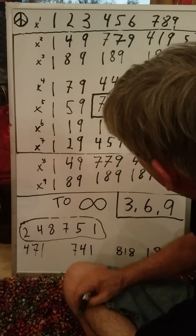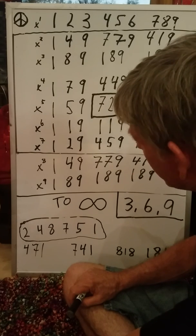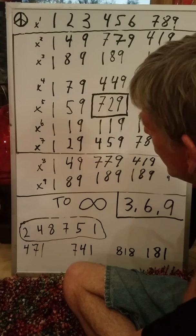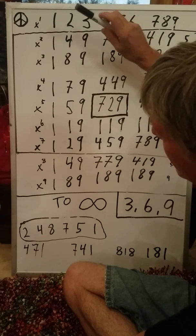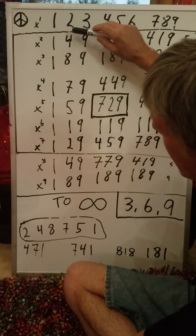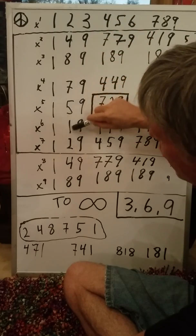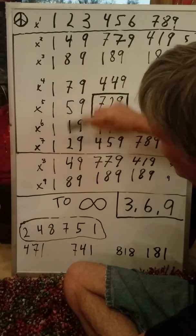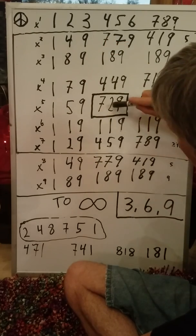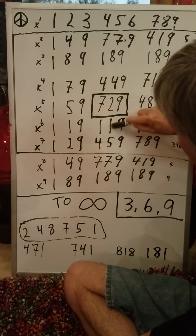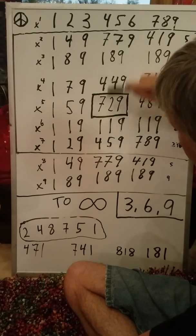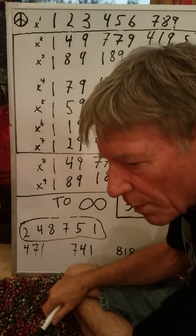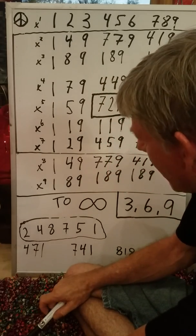Now we'll cover a couple of other interesting facets — these sequences of numbers. The sequence 2, 4, 8, 7, 5, 1 repeats forever. These numbers double according to that sequence: 2 doubled is 4, 4 doubled is 8, 8 doubled is 16 (1+6=7), 16 doubled is 32 (3+2=5), 32 doubled is 64 (6+4=10=1), 64 doubled is 128 (1+2+8=11=2). It's a repeating sequence — it goes on forever. If you start with a 7: 7 doubled is 14 (1+4=5), 14 doubled is 28 (2+8=10=1), 28 doubled is 56 (5+6=11=2). You can do this with any of these numbers.